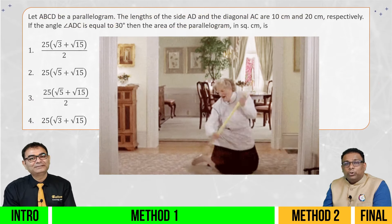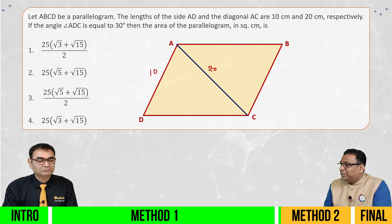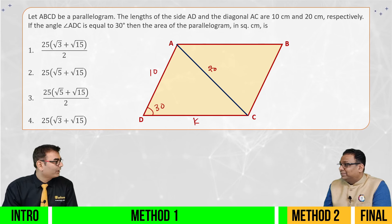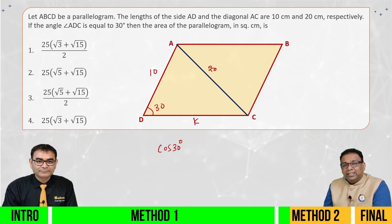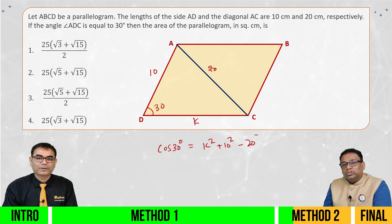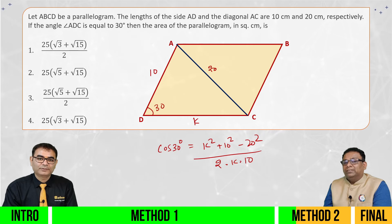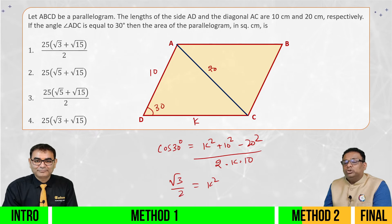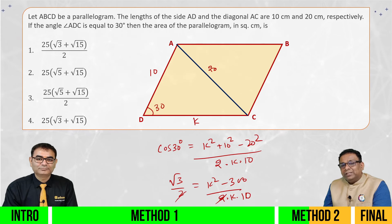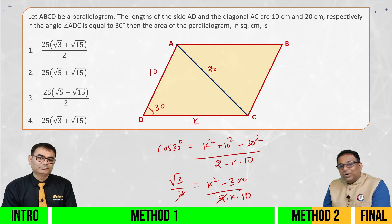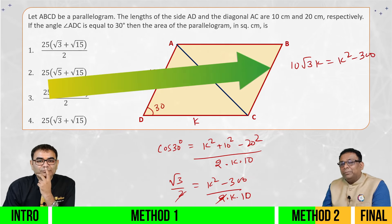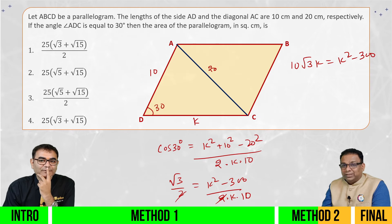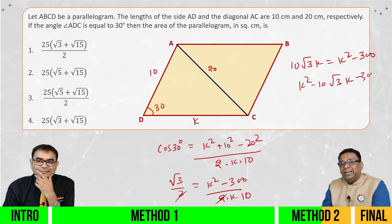Let's go. What was the length of AD? 10. What was the length of AC? 20. I don't know the third side — let's say this is equal to K. And what is the angle? 30 degrees. So can I use the cosine rule to find side K? Yes. You can also use cos theta. That's right. So cos of 30 degrees is equal to K square plus 10 square minus 20 square divided by 2 into K into 10. And cos 30 is root 3 by 2. So root 3 by 2 equals K square plus 100 minus 400 — that is minus 300 — upon 2 into K into 10. Cross multiplying: 10 root 3 K equals K square minus 300. So K square minus 10 root 3 K minus 300 equals 0.